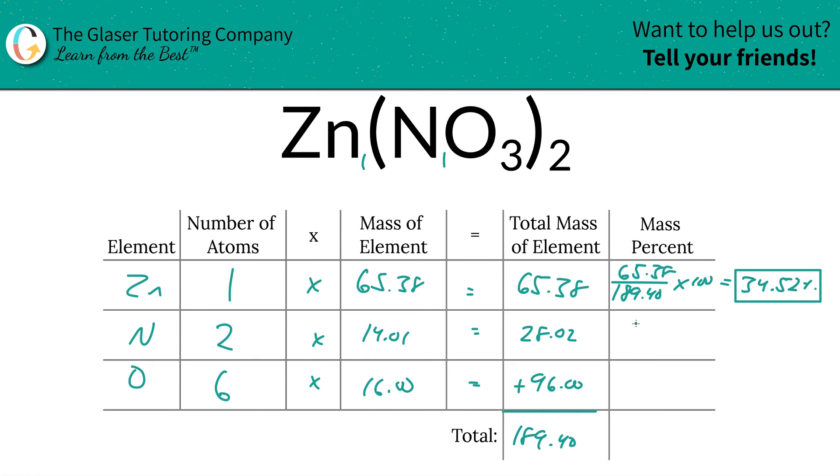Nitrogen. Take the total mass now of the nitrogen, the 28.02, divided by the total mass of that entire compound, 189.40. Don't worry about the units, by the way. They're all going to cancel. Whatever units you use, they're all going to be the same. So 14.79%. That's going to be the percent now for nitrogen.